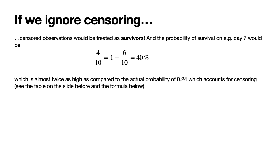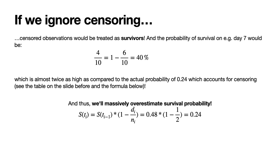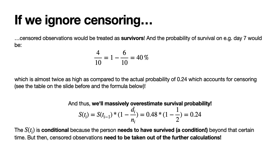I know I've repeated this several times, but it's important — bear with me. The survival probability is conditional because the person needs to have survived beyond a certain time — that is the condition. Censored observations then need to be taken out of further calculations; otherwise it leads to survivorship bias.